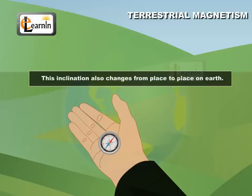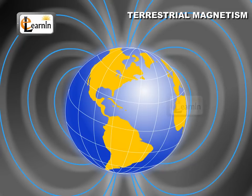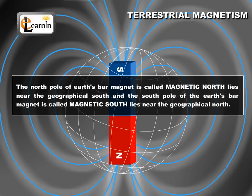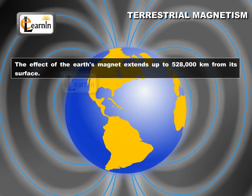These observations prove that the earth behaves as a huge magnet. Earth's magnet may be imagined as a giant bar magnet stuffed inside the earth, with two ends running between the geographical south and north. The north pole of the earth's bar magnet, called the magnetic north, lies near the geographical south, and the south pole, called the magnetic south, lies near the geographical north.